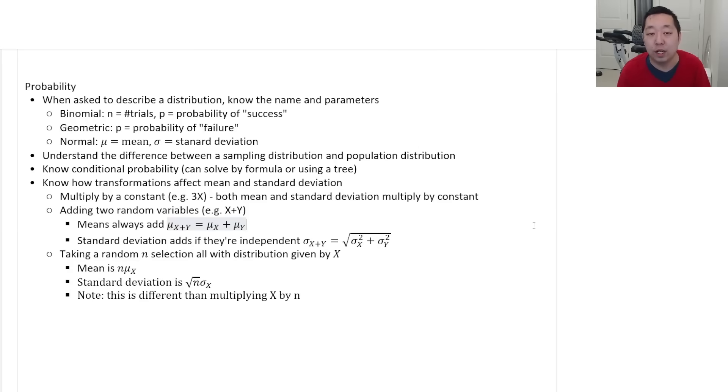For example, if I take a random variable and multiply it by a constant, the mean and standard deviation both multiply by that constant. As opposed to taking a random selection. So for example, suppose I know the distribution weight of like a marble has a weight of a mean mu and a standard deviation sigma. And I take the weight of one marble and multiply it by 10, then the mean and standard deviation multiply by 10.